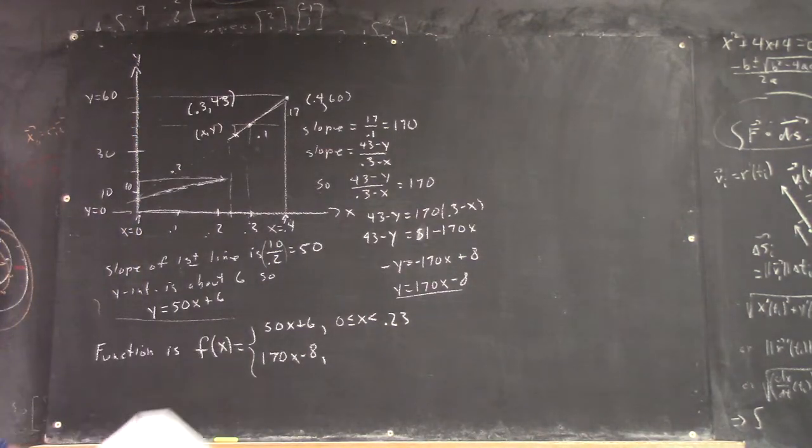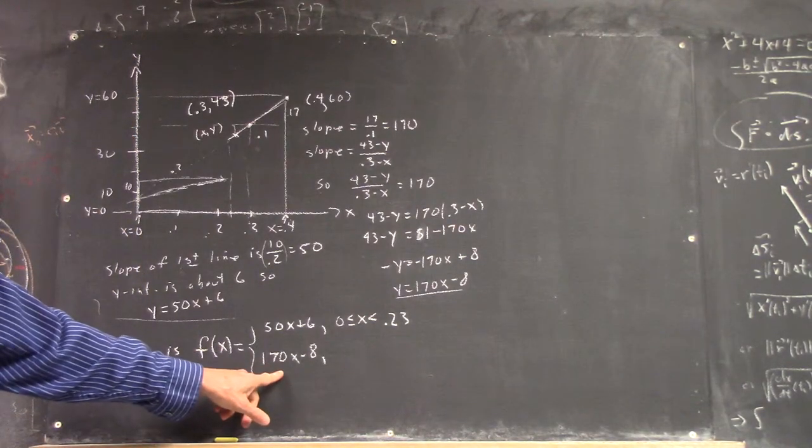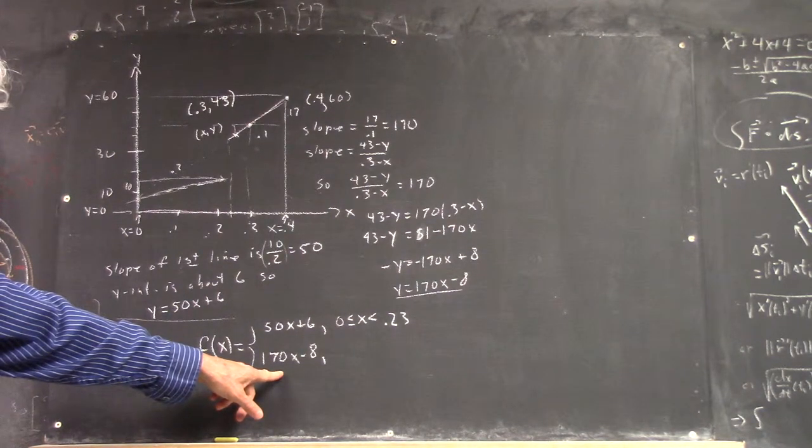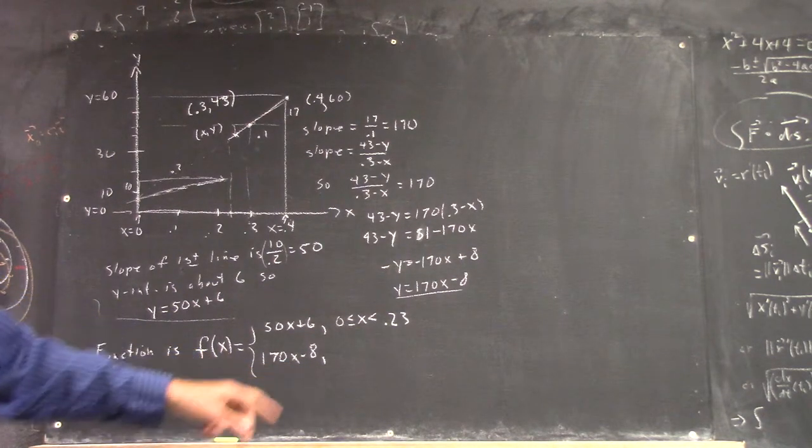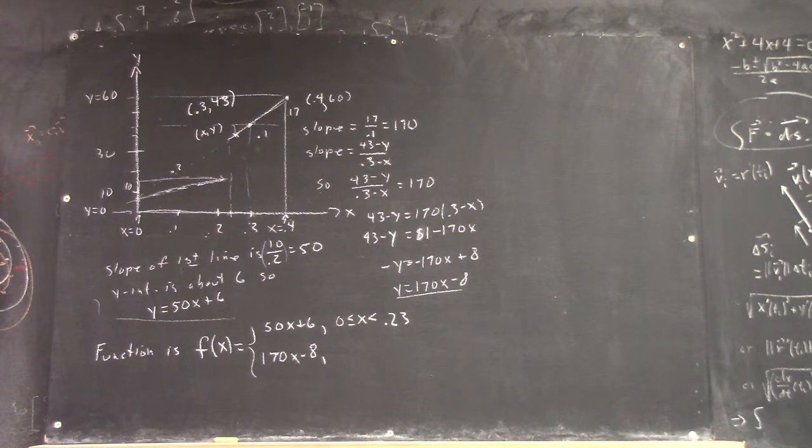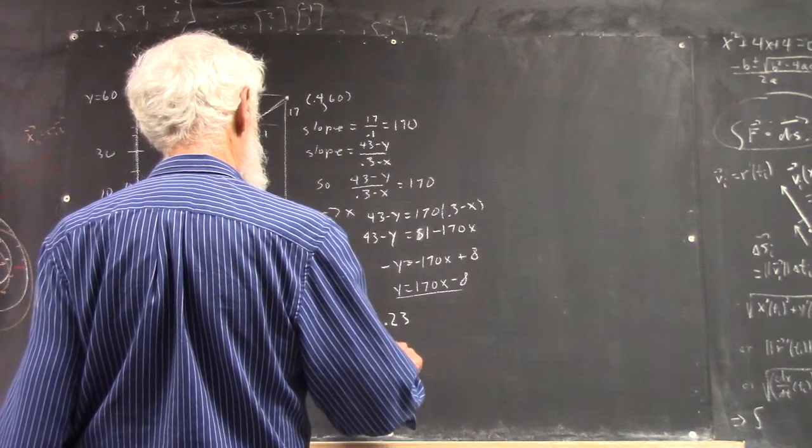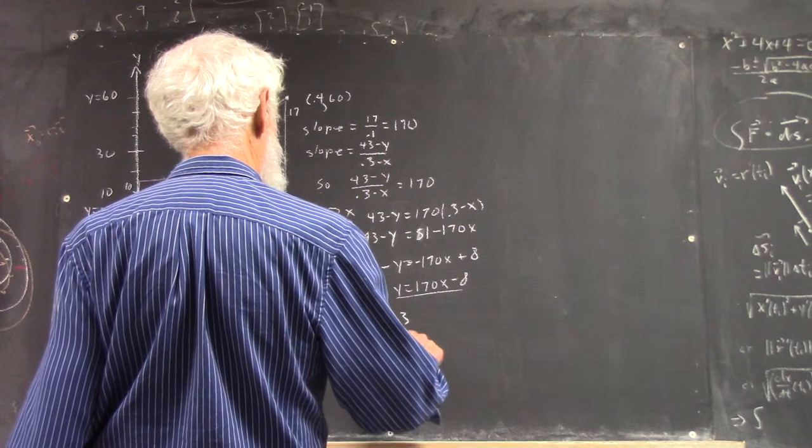where is this function? Where does this function apply? Well, I'm going to just write it down: 0.23 less than or equal to x, less than or equal to 0.4.